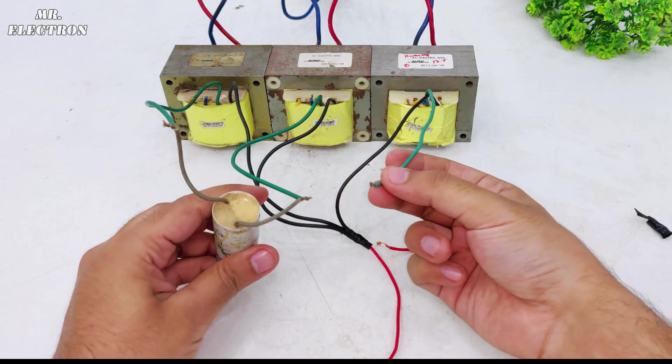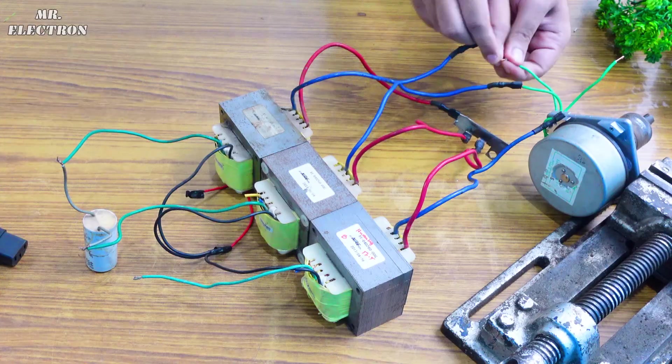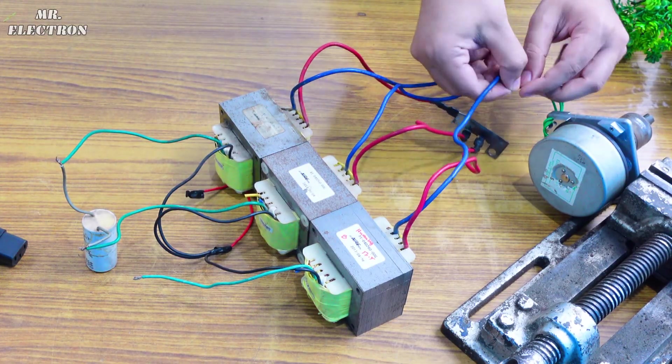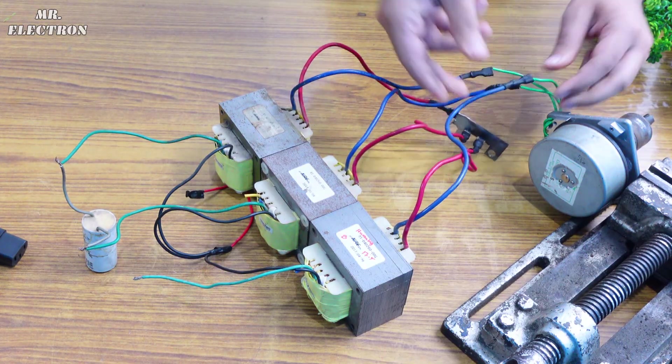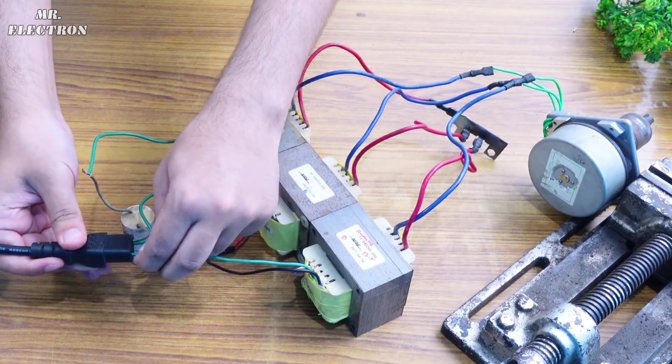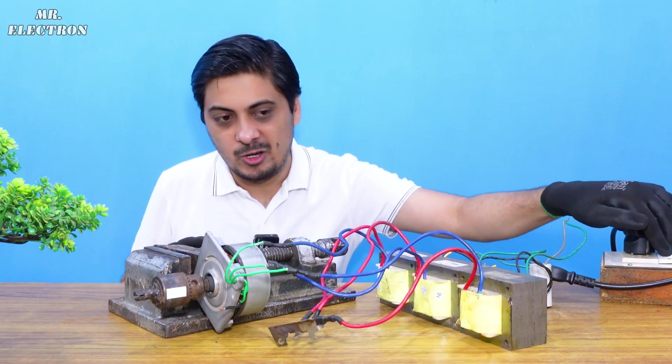And these two points are going to be connected to the 220 volts supply. So starting with the connections of the brushless motor with the transformer output wires and finally connecting the input side to the 220 volts mains. Turning it on.